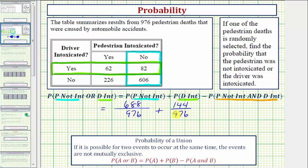But notice how in these two probabilities, we counted these 82 deaths twice. These 82 deaths were when the pedestrian was not intoxicated and when the driver was intoxicated. This is the reason why we have to subtract this last probability, which again is the probability that the pedestrian was not intoxicated and the driver was intoxicated.